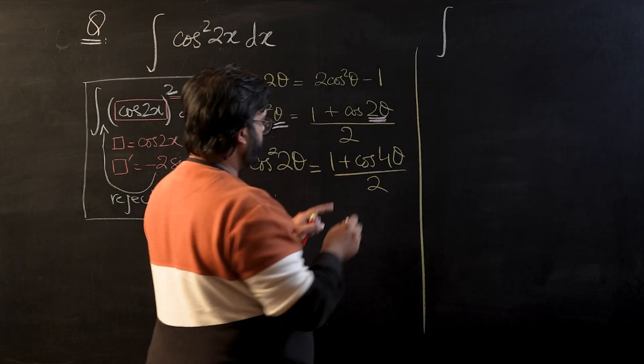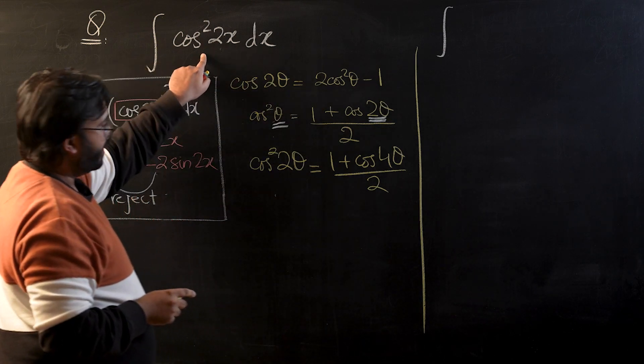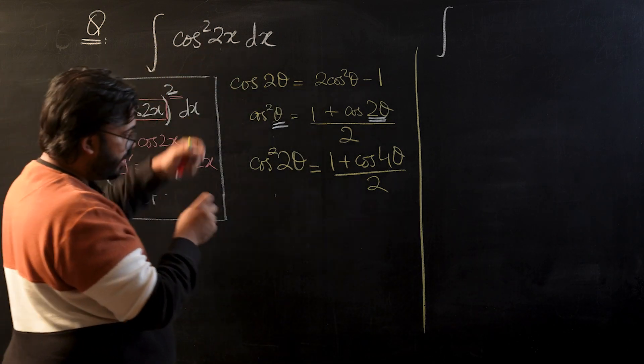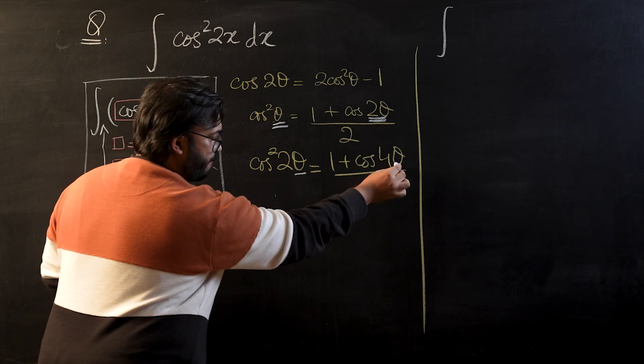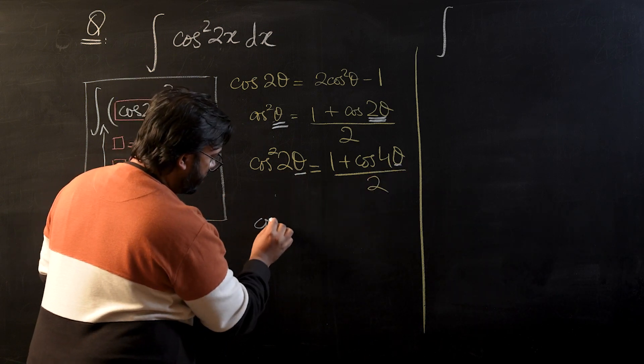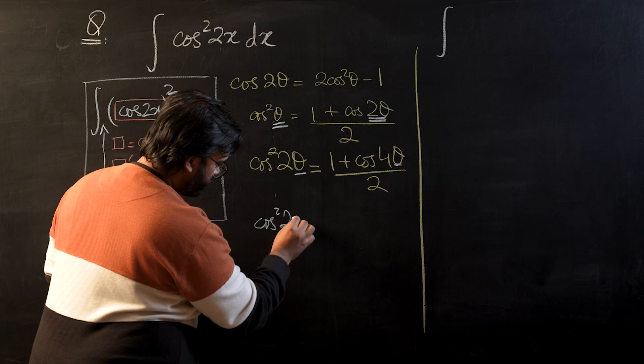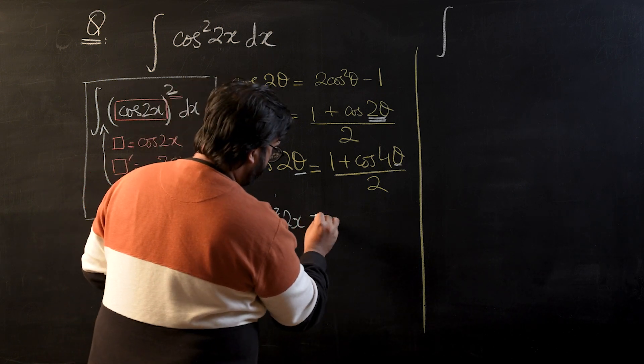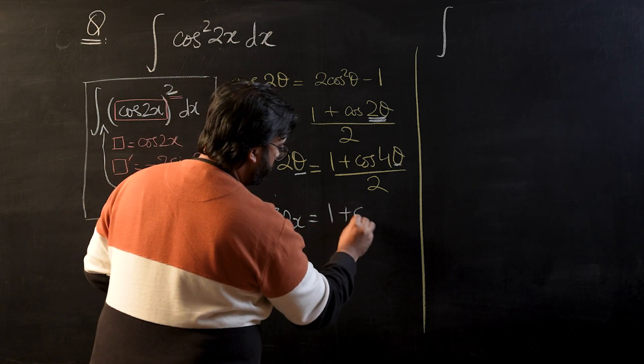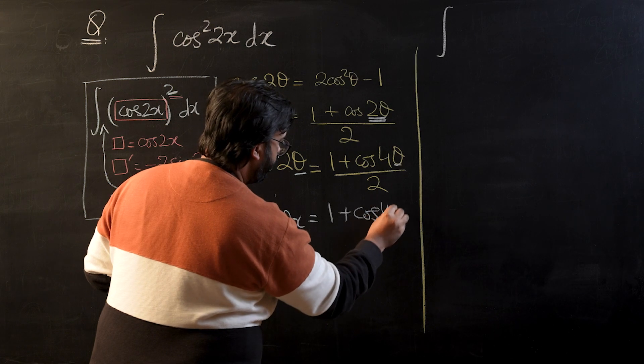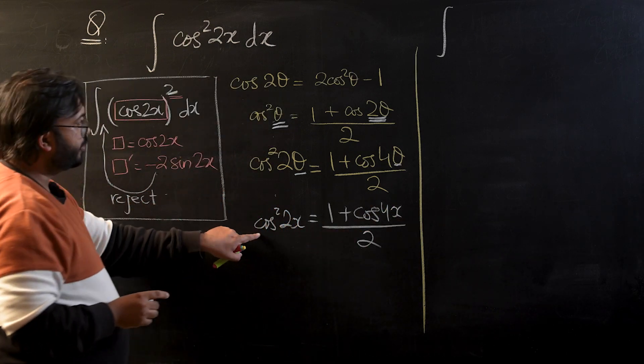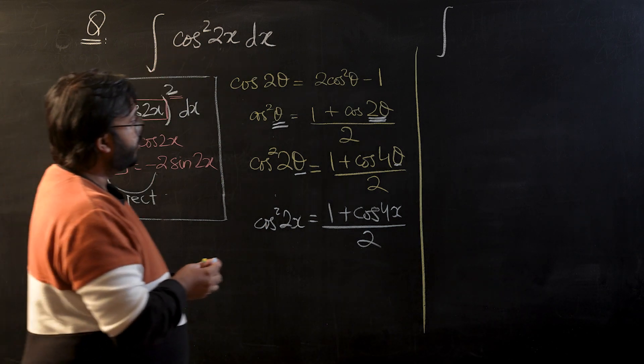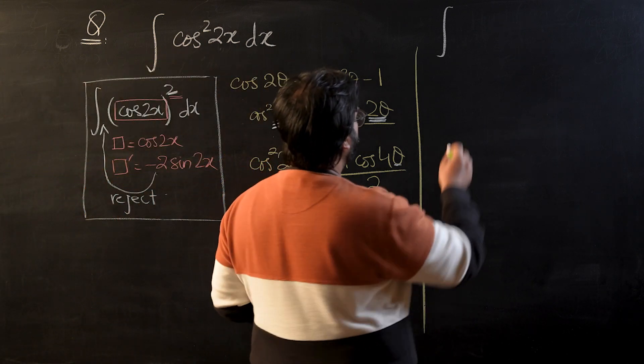Now I am going to substitute this thing in the place of cos²(2x), except that I am going to use x instead of θ. So let me just write it quickly. Cos²(2x) will be equal to (1 + cos(4x))/2, and this is a substitution that I am going to take for cos²(2x). Now let's go on and apply this substitution.